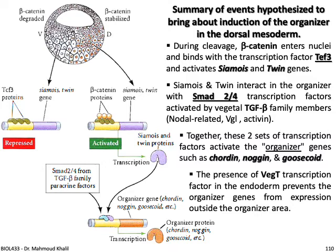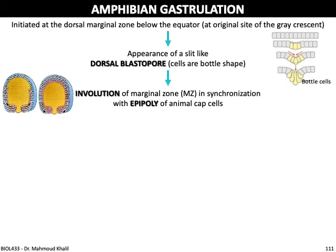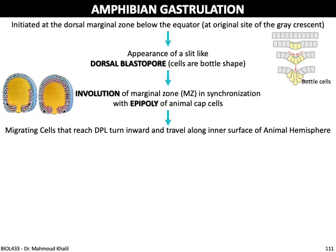Let's summarize the events of gastrulation. Gastrulation is initiated at the dorsal marginal zone below the equator, at the original site of the gray crescent. It starts with the appearance of a slit-like dorsal blastoporal lip. The cells are bottle-shaped — called bottle cells — and begin moving inward, followed by involution of the marginal zone in synchronization with epiboly of the animal pole.